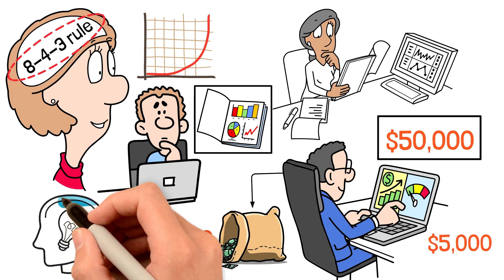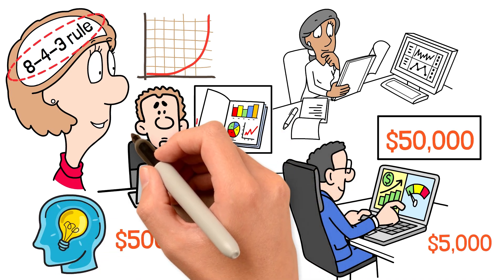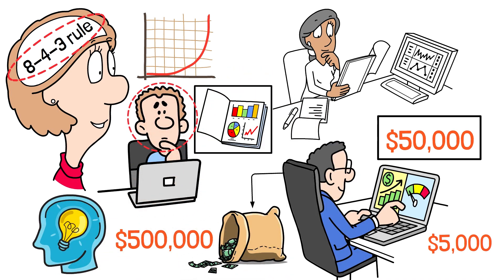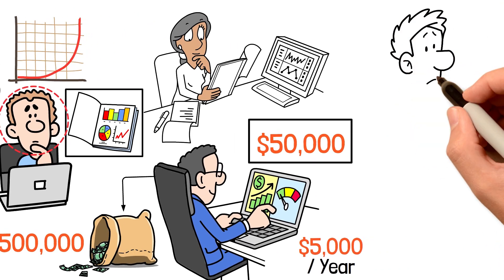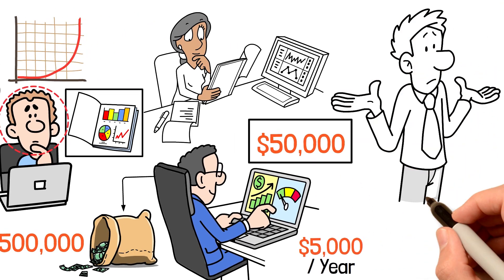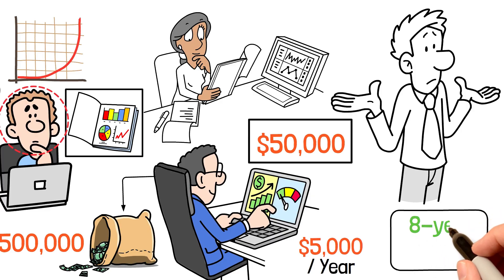The 8-4-3 rule reframes your expectations. Instead of feeling discouraged that your account is only growing by $5,000 per year in the early stages, you understand that this is exactly what's supposed to happen. You're in the 8-year phase, building the foundation.